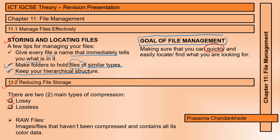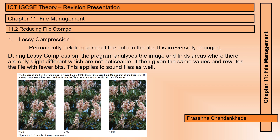Raw files are images or files that haven't been compressed and contain all their color data. Lossy compression involves permanently deleting some of the data in the file — it is irreversibly changed. During lossy compression, the program first analyzes the image and finds areas where there are only slight differences that are not noticeable. It then assigns the same values and rewrites the file with fewer bits. This applies to sound files as well.